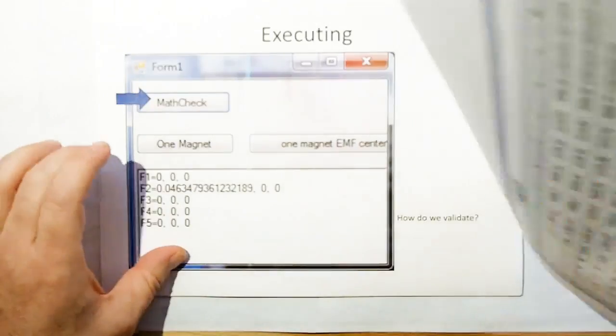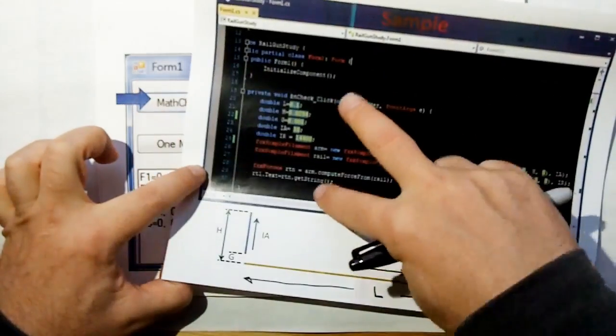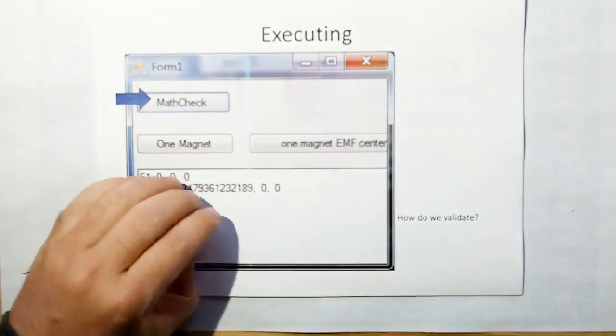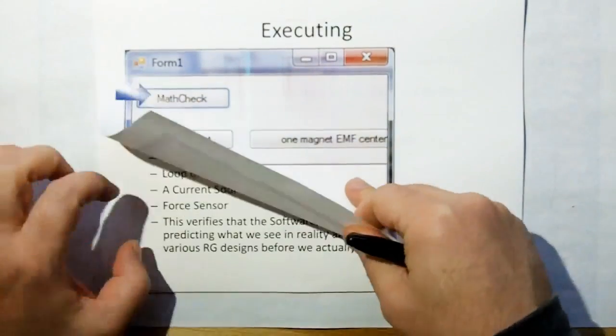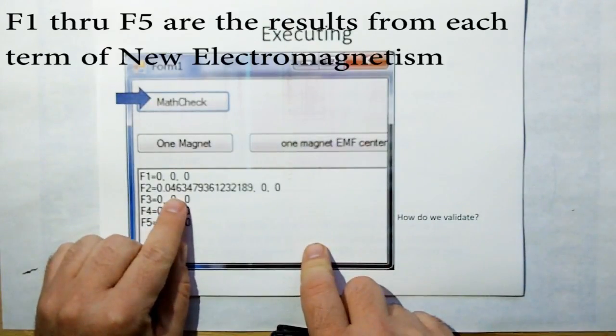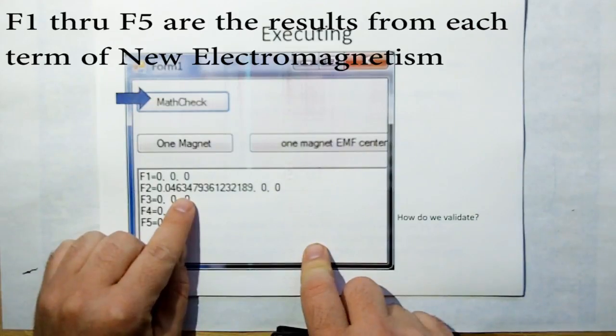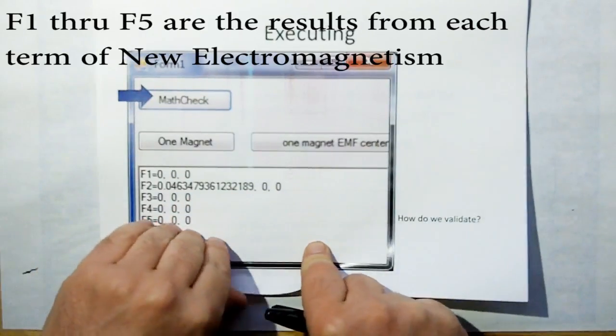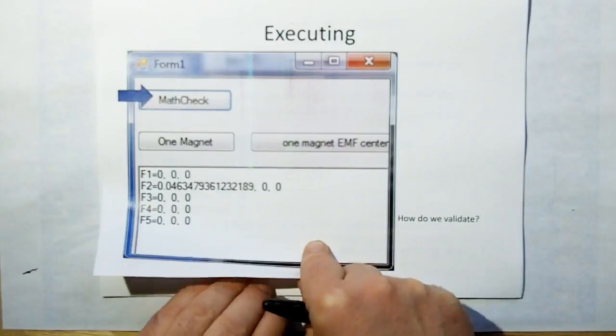So anyway then we click on this button, which is the button handler for this, and we get an answer. It says 46.3 millinewtons is acting on the armature.